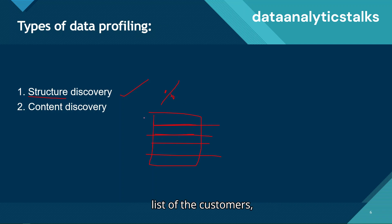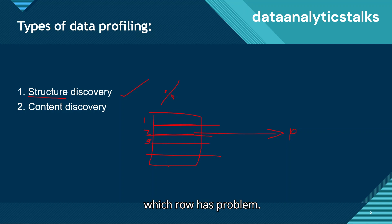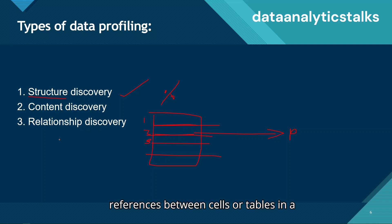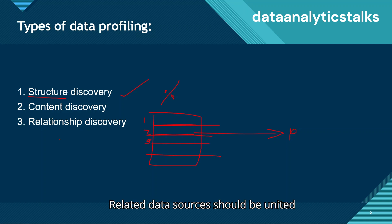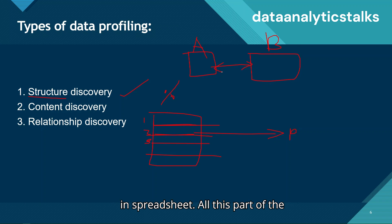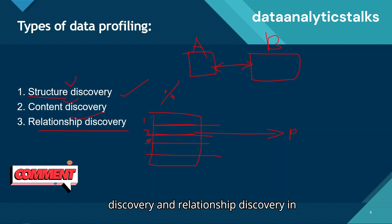Content discovery identifies which specific rows in a table contain problems. For example, if you maintain a customer list, you need to identify which specific row has a problem. Third is relationship discovery — understanding how parts of the data are interrelated, such as key relationships between database tables and references between cells or tables in a spreadsheet. Understanding relationships is crucial to reusing data and ensuring data sources are united in a way that preserves important relationships.